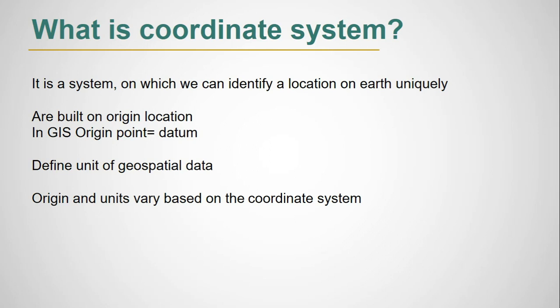Now what is coordinate system? It is a system on which we can identify a location on Earth uniquely. They are built on origin location. In GIS, we know that origin point is called datum. It defines the unit of geospatial data. Origin and units vary based on coordinate system. That's all for today. Thank you everyone.